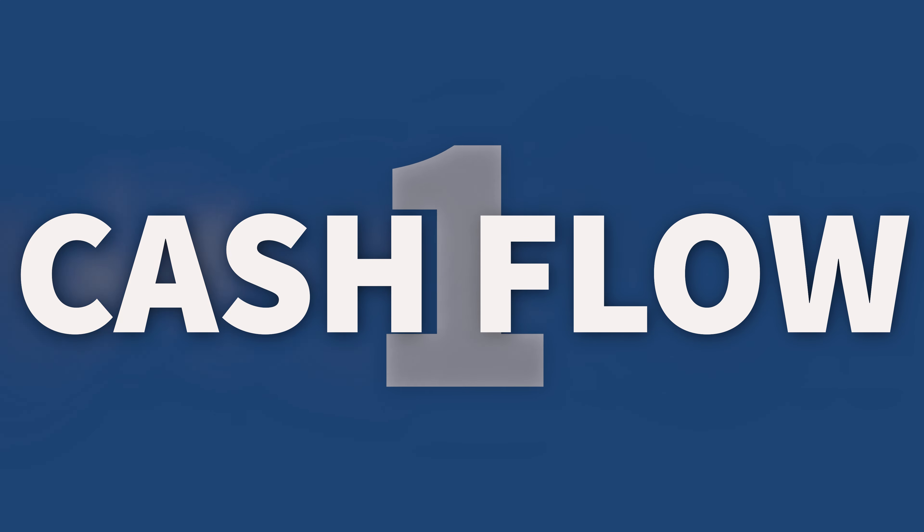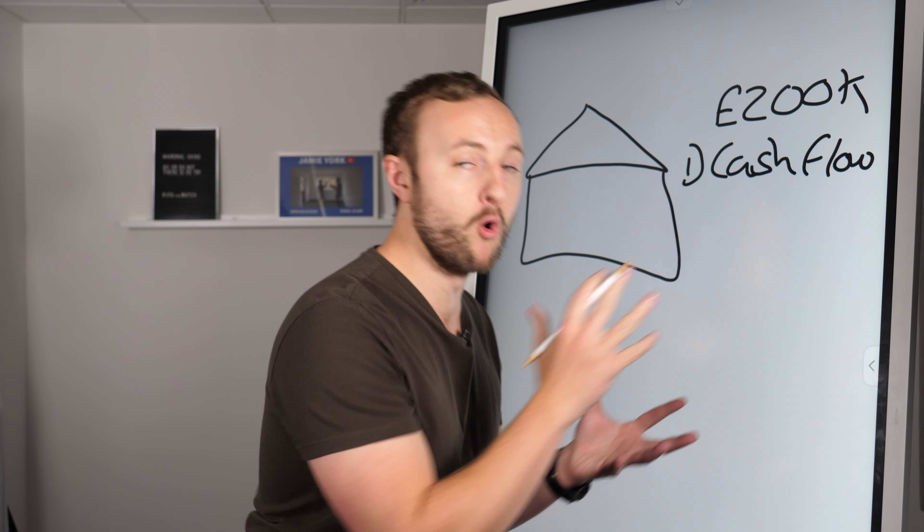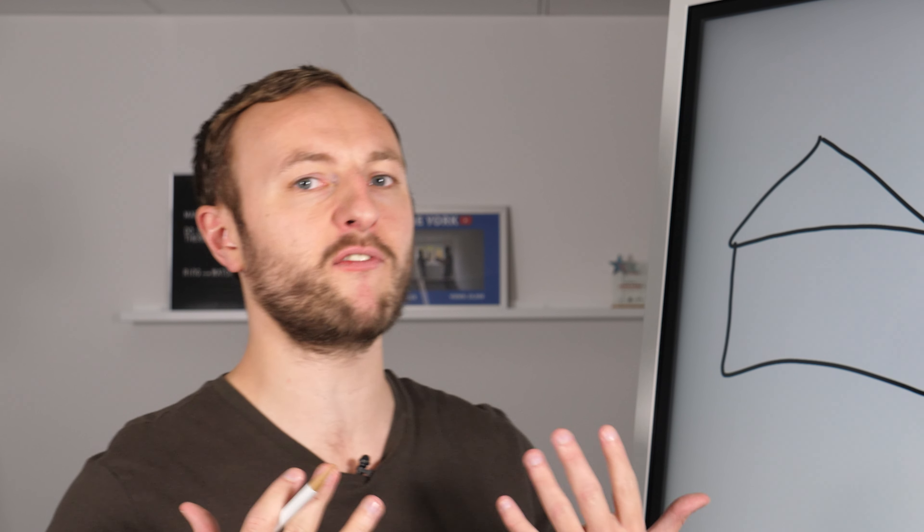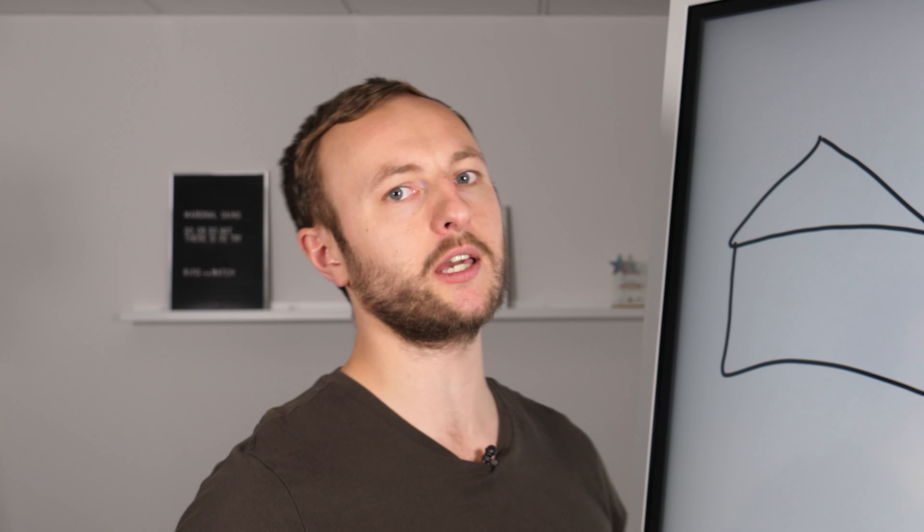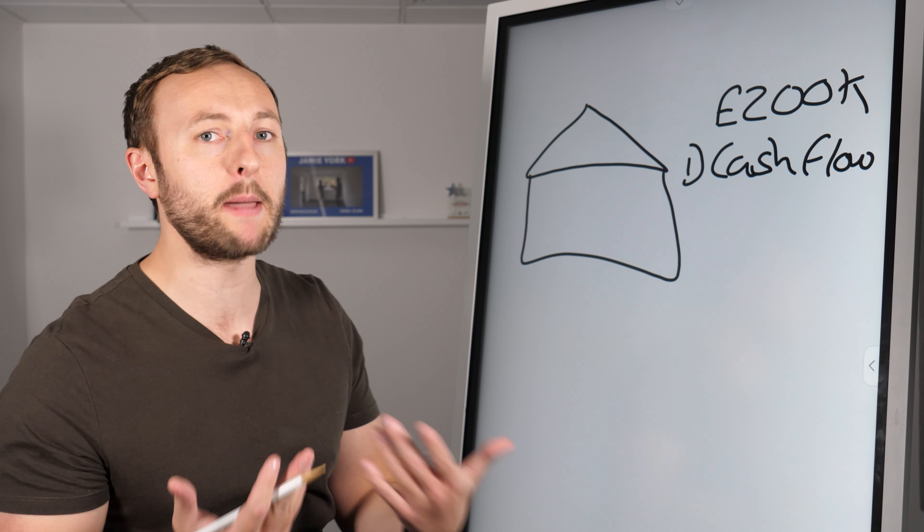Cash flow is the number one way that most people think about. Believe it or not, it's not actually how you make most of your money in property, but it is a really good way. Cash flow is simply from the rent. Typically you're going to get a mortgage on this property, debt against it, so you can buy more property.